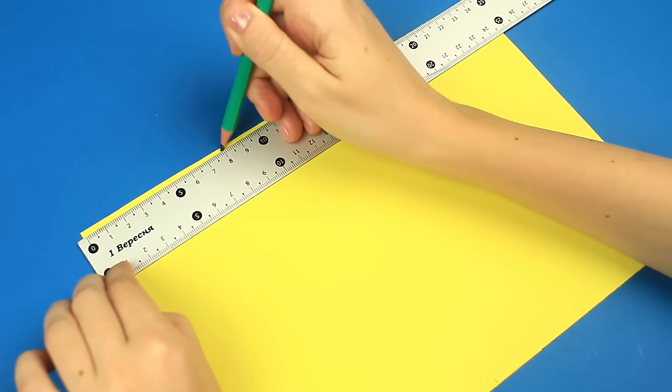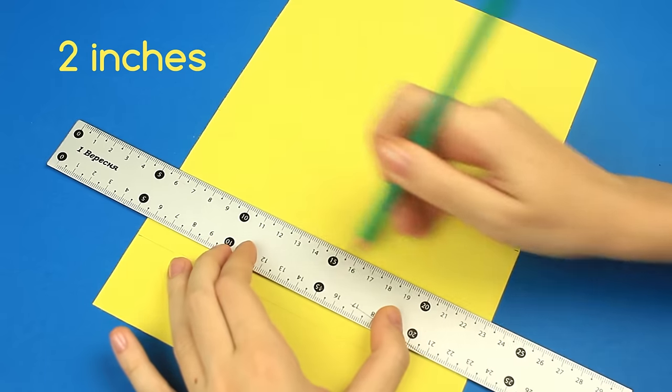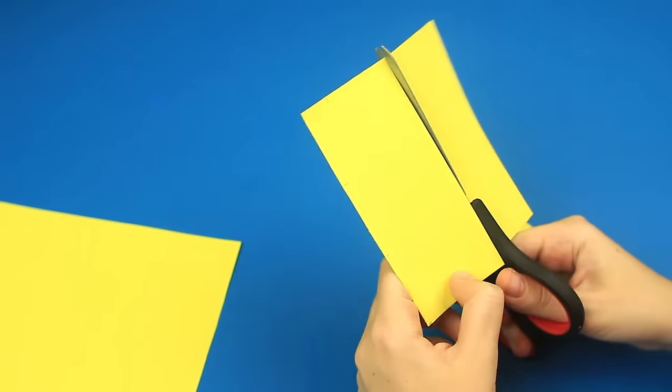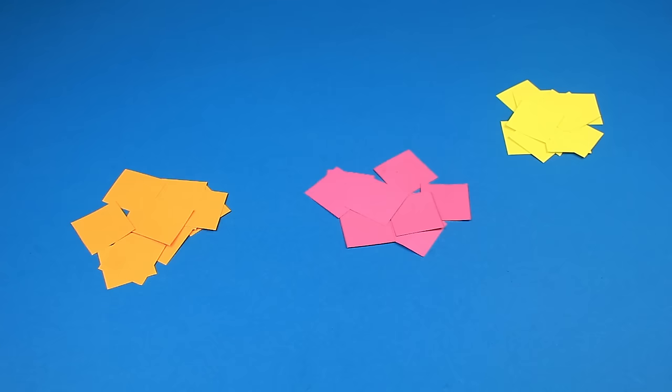Take paper of a different color and draw 2 inch side squares. Cut them out. Prepare several squares of various colors.